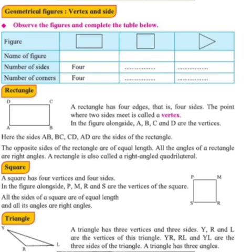Next, we have a triangle. A triangle has three vertices and three sides. Here the vertices are named Y, R, and L. So Y, R, and L are the vertices of the triangle, and YR, RL, and YL are the three sides. A triangle has three angles.